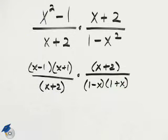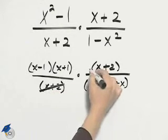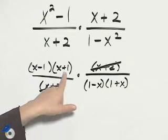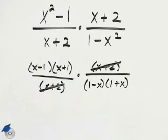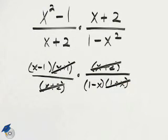We can now divide out common factors. We notice that we have a common factor of x plus 2, so we can divide that out. Now, x plus 1 is actually the same as 1 plus x by the commutative property of addition. So we can divide out those factors as well.